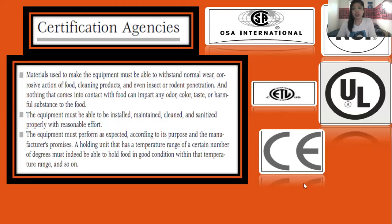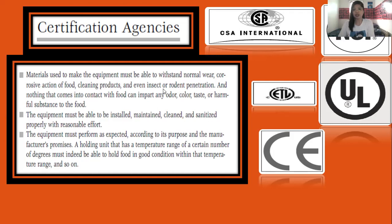Regarding certification agencies — CSA, NSF, UL, ETL, and CE — the materials used to make equipment must withstand normal wear, the action of food, cleaning products, and even insect or rodent penetration. Nothing in contact with food can impart any odor, color, taste, or harmful substance. Equipment must be installable, maintainable, cleanable, and sanitizable with reasonable effort, and must perform as expected according to its purpose and the manufacturer's promises. A holding unit rated for a certain temperature must indeed hold food in good condition within that temperature range.